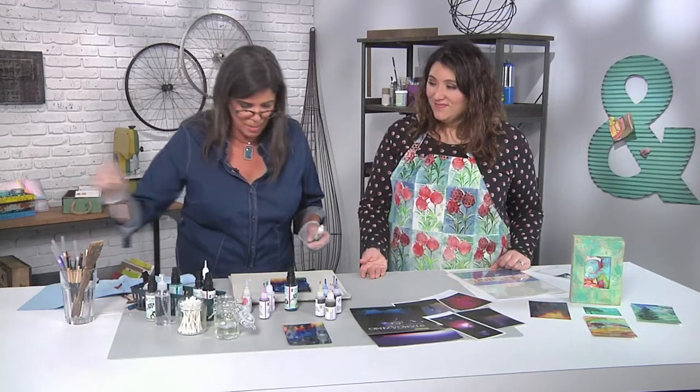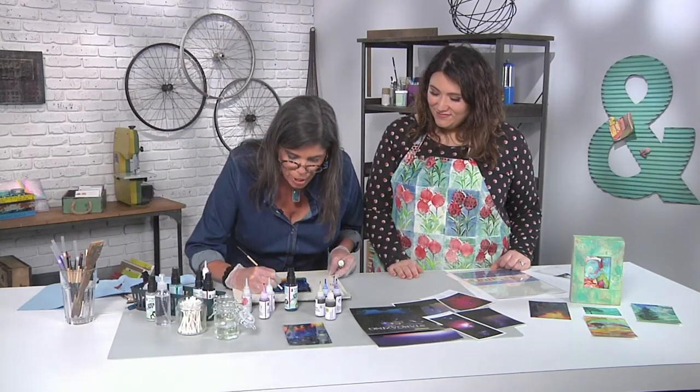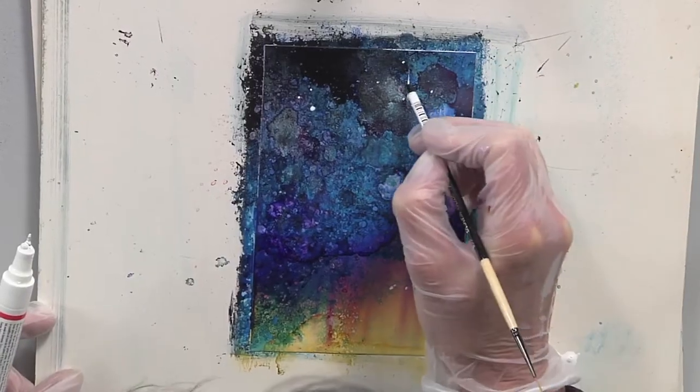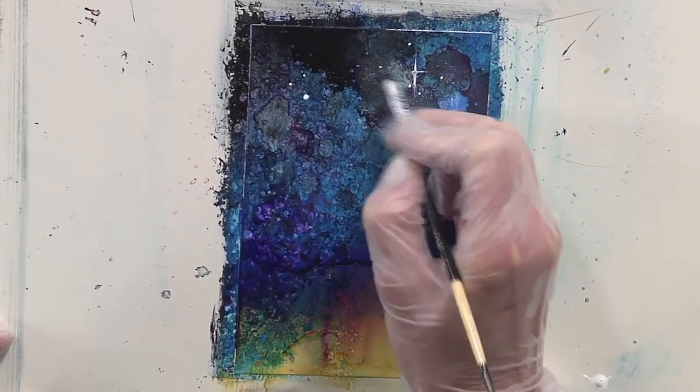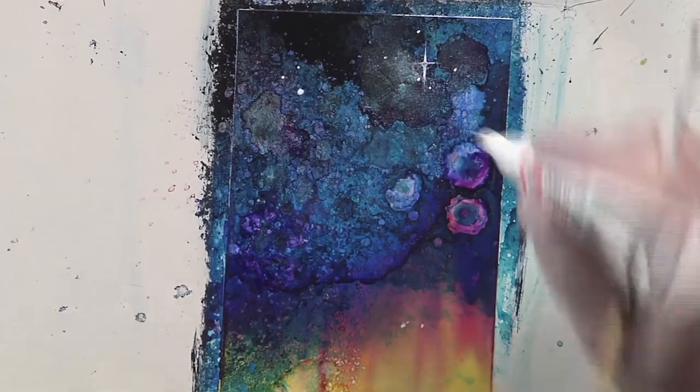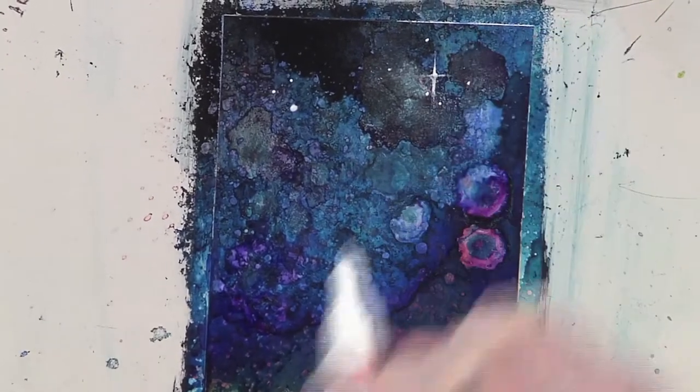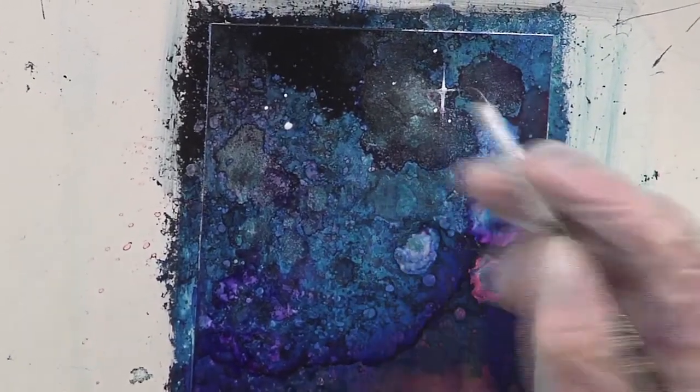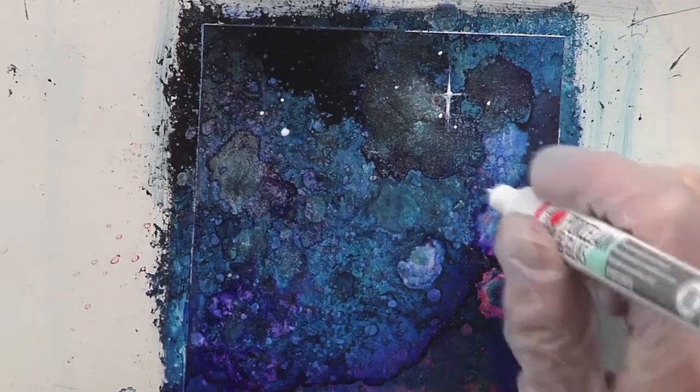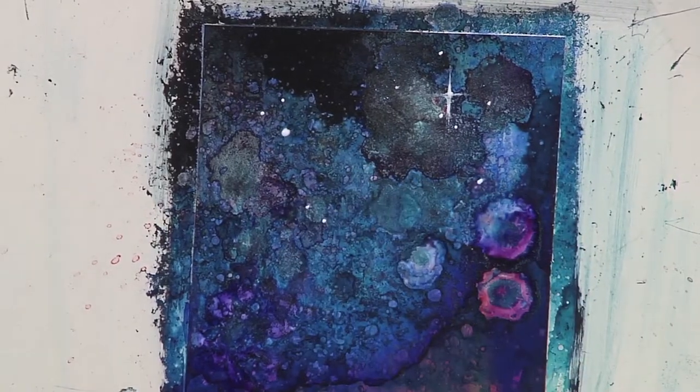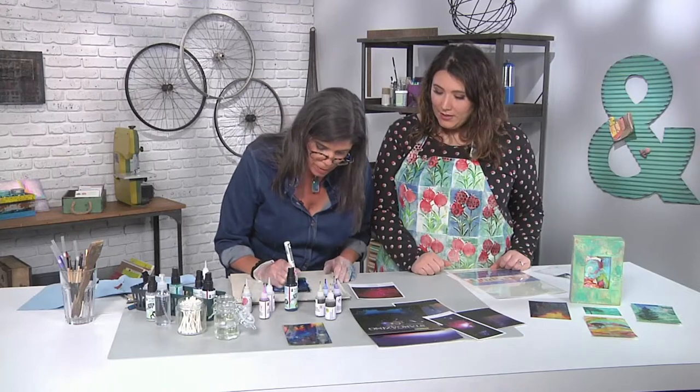Use the end of the paint brush and you can just kind of pull out. Because if you look at stars, the light kind of travels out in these rays. So you can add a little bit more in there. I can actually see in some of your inspiration photos exactly where we can see that star shape pulling out.